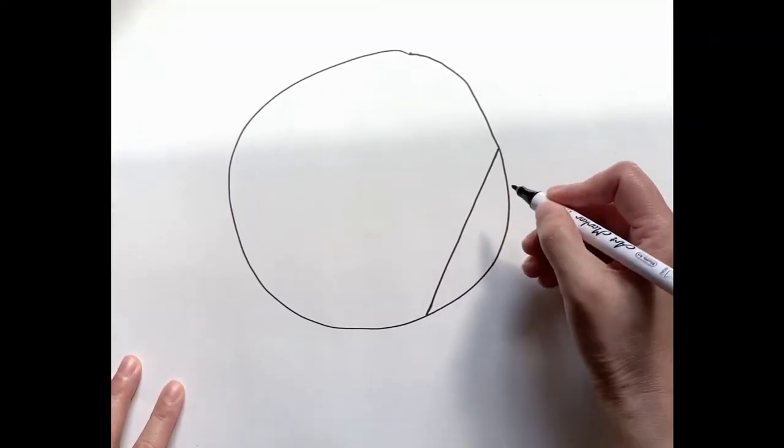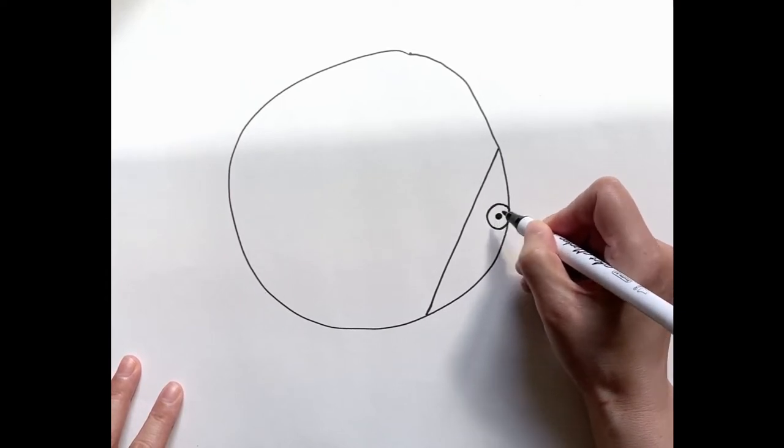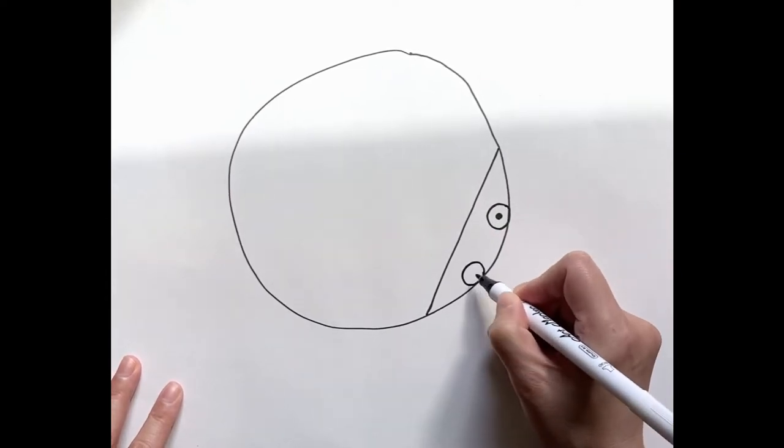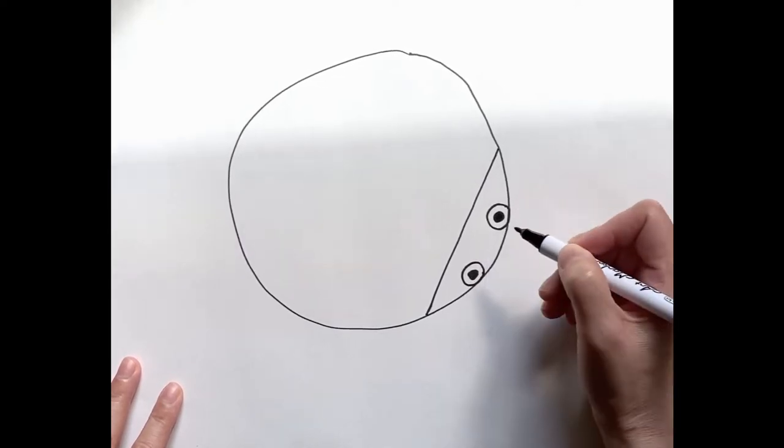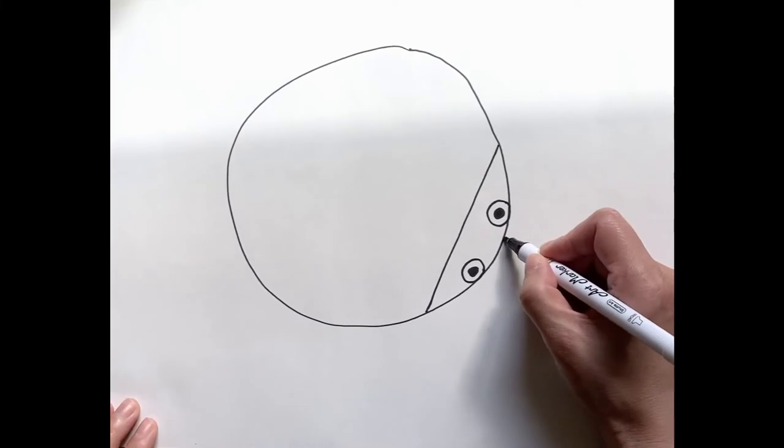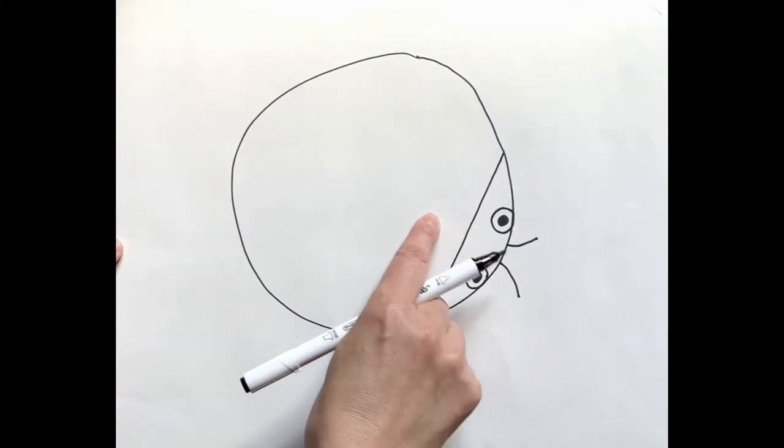Two eyes on the front of the head. Two antennas on the head. Two wings on the back.